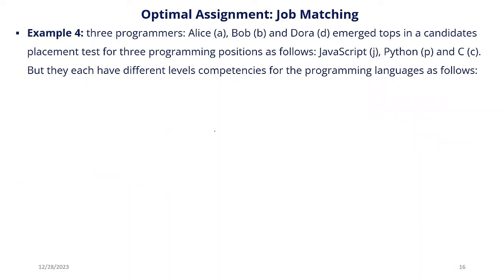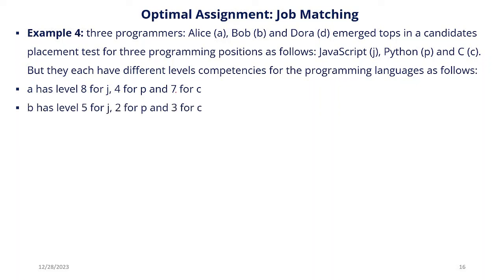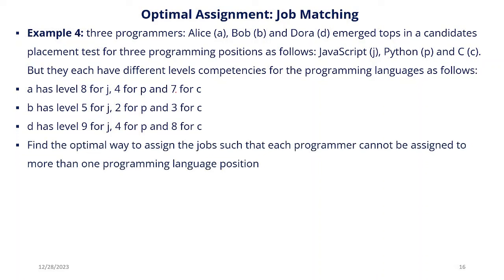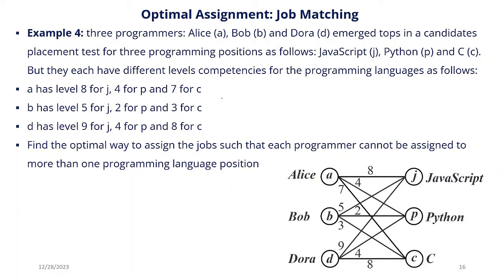Now let's look at an analogous example with Alice, Bob, and Dora as three programmers. We want to place them in three different roles. Alice has level 8 for Java, 4 for Python, and 7 for C; Bob has level 5 for Java, 2 for Python, and 3 for C; Dora has level 9 for Java, 4 for Python, and 8 for C. The problem is to find the optimal way to assign jobs such that each programmer is assigned to at most one programming language. But this time, we are not looking for the minimum — we are looking to maximize competence levels.